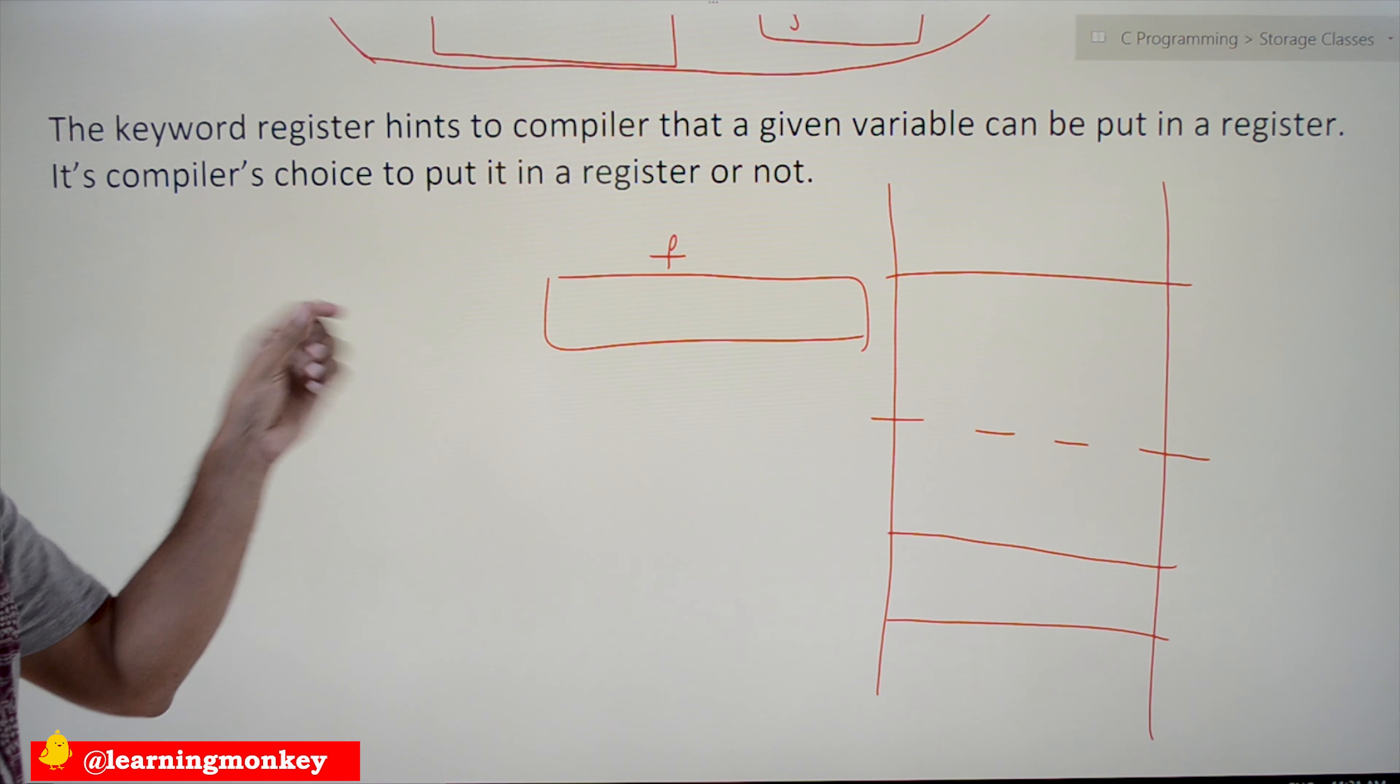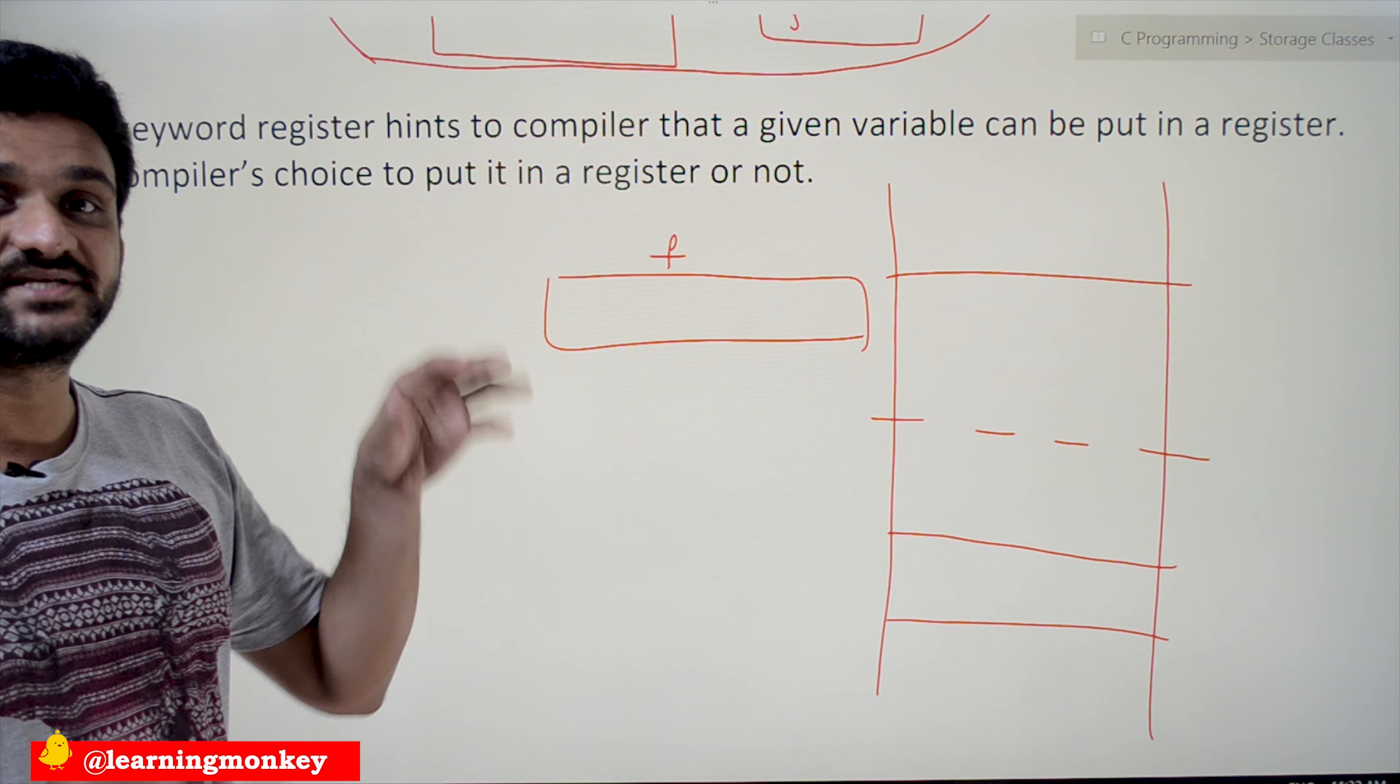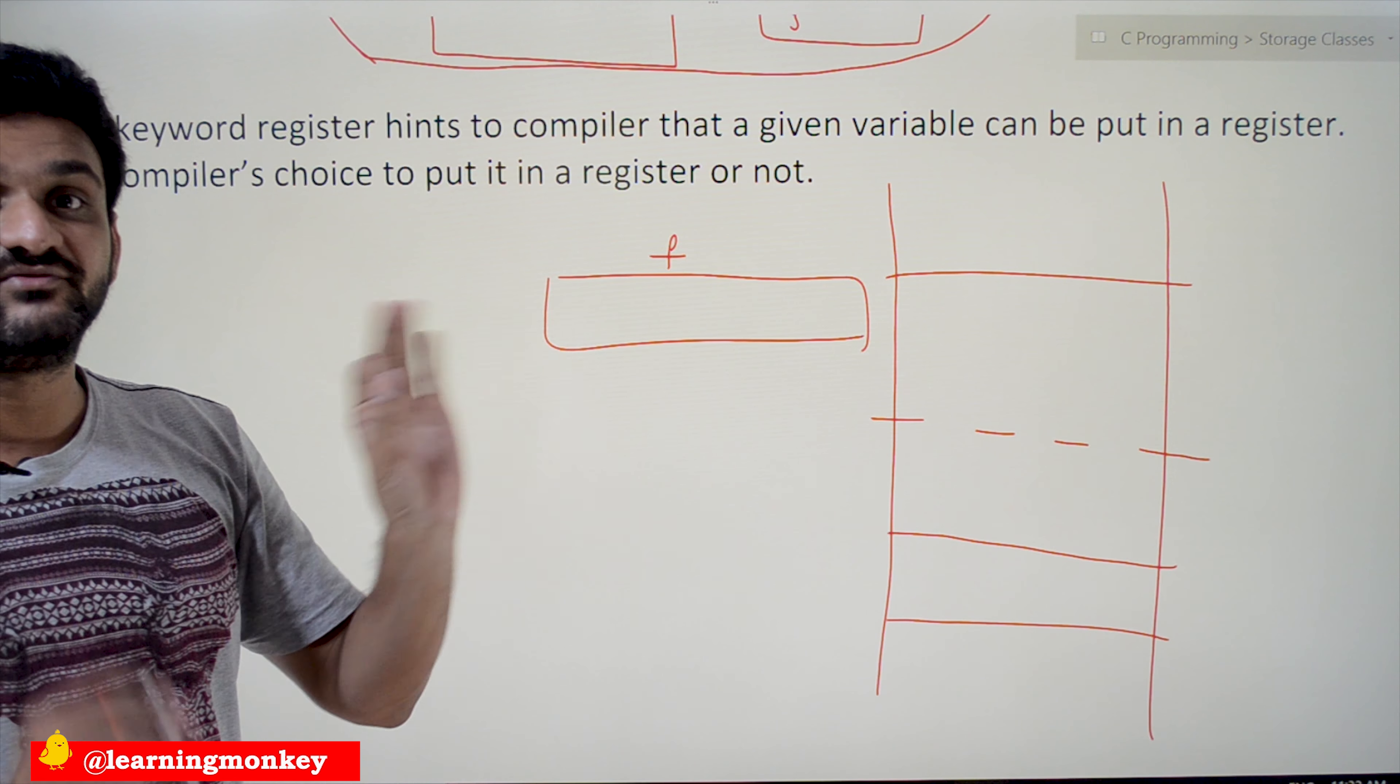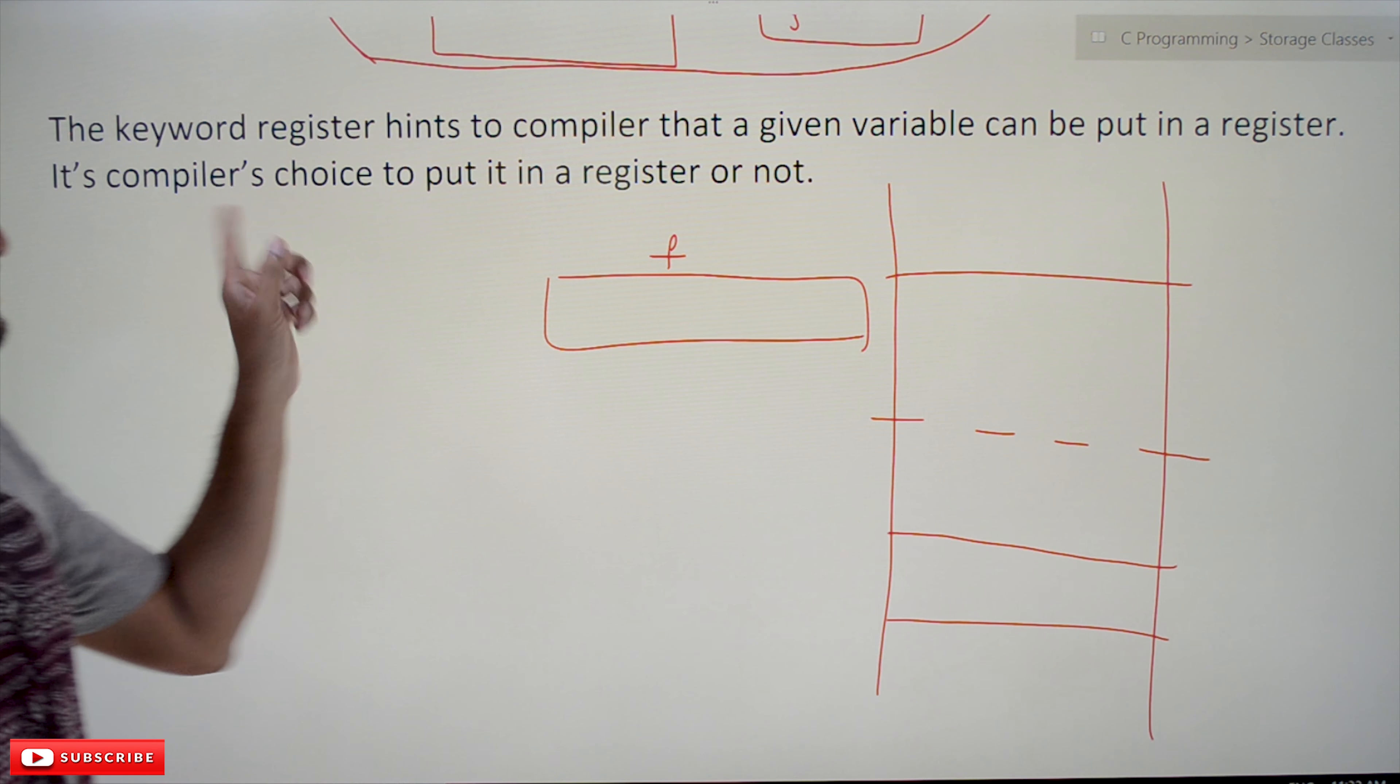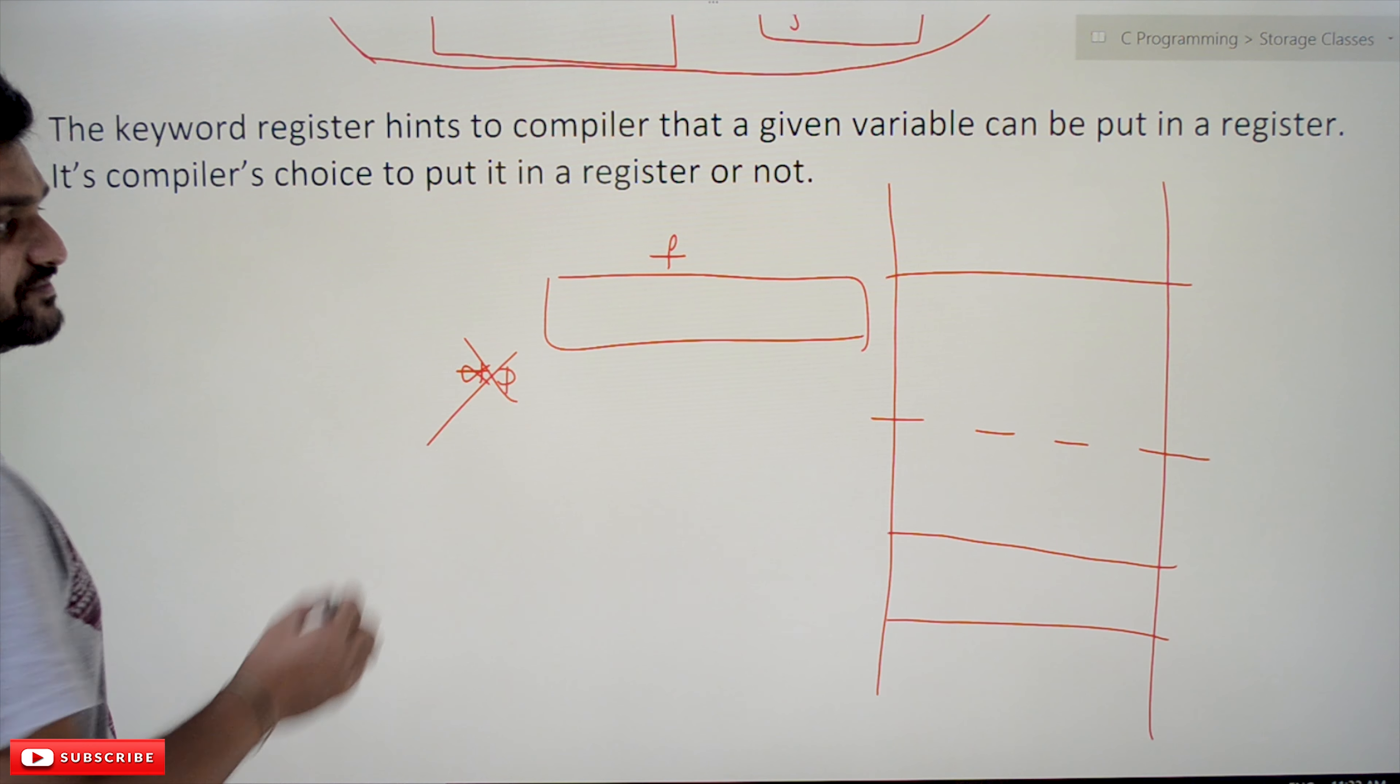If your program wants some of the variables to be stored in registers, most frequently used variables can be stored in registers, but it is not accepted in all cases. If there are some extra registers, such kind of architecture is there on your computer, then only this register facility is supported. Unless some extra registers are there, this feature will not be supported, so the compiler may store the values in the RAM itself.